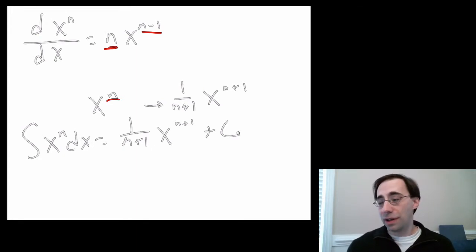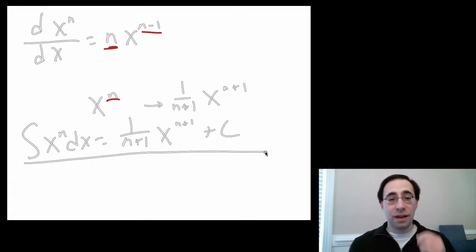We can check this. If we differentiate, we pull down the n plus 1. That cancels with the 1 over n plus 1, just yielding 1. And the exponent decreases by 1, leaving x^n. So if we differentiate the integral, we end up back again with x^n. Remember, the derivative of C is 0. So this is, in fact, the antiderivative, and this is the rule for almost all powers, for integrating almost all powers. There's one and only one exception here, which is when n equals negative 1.